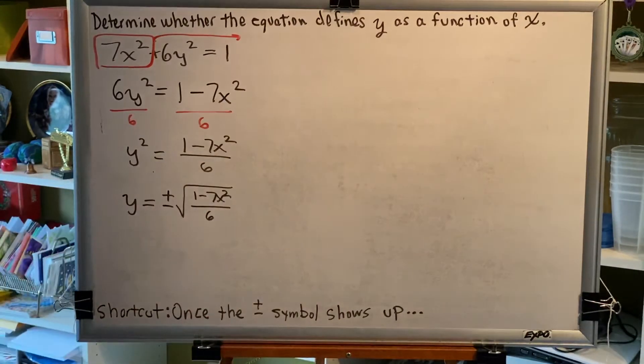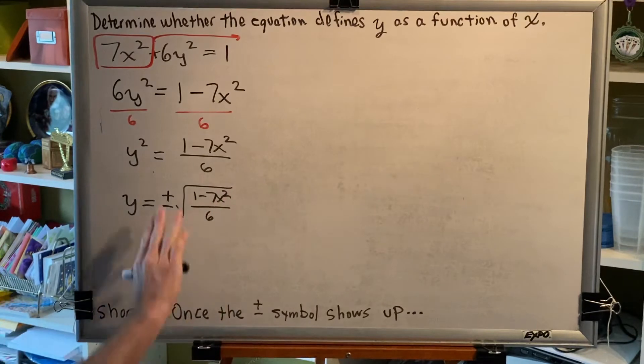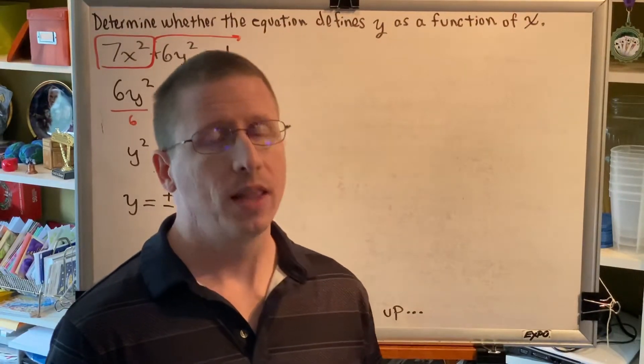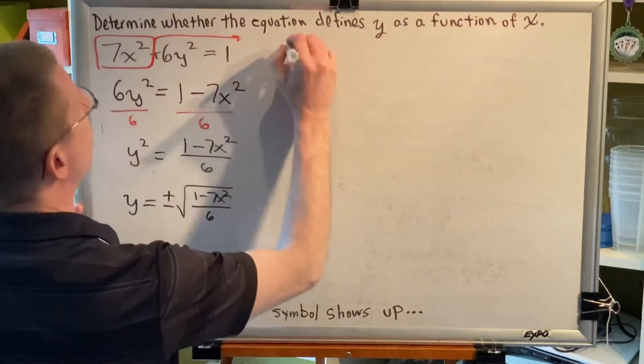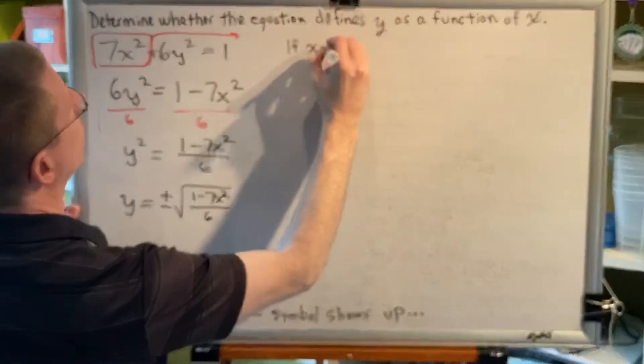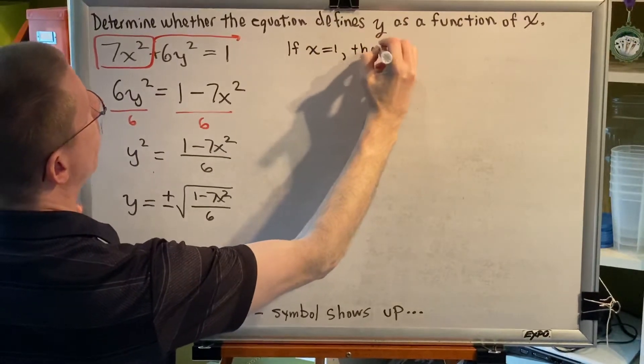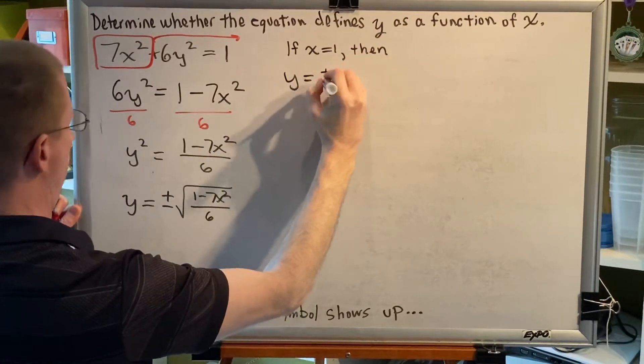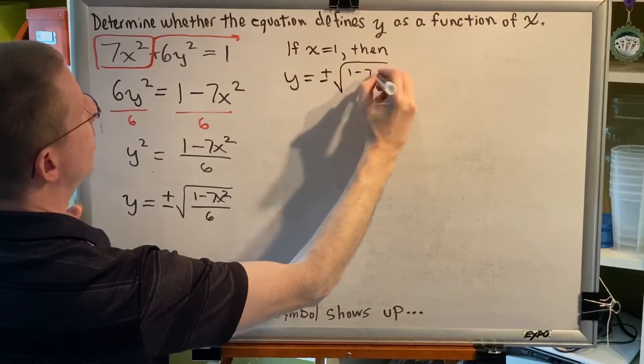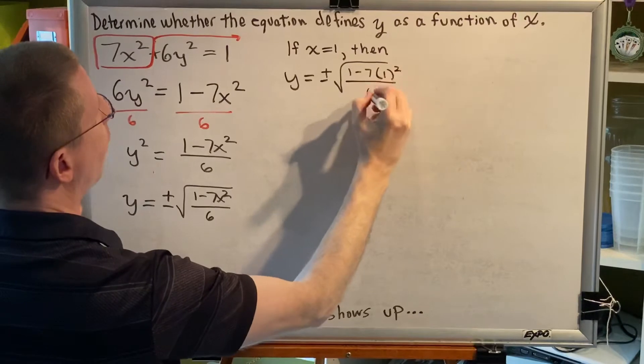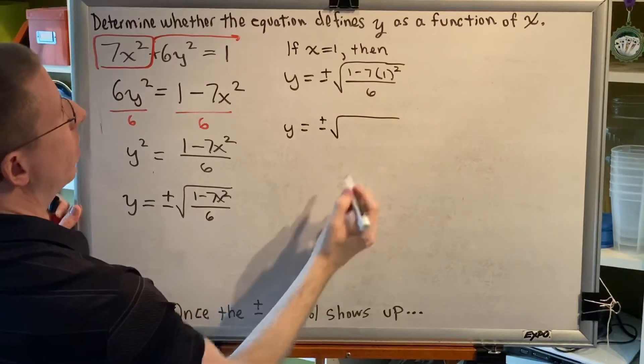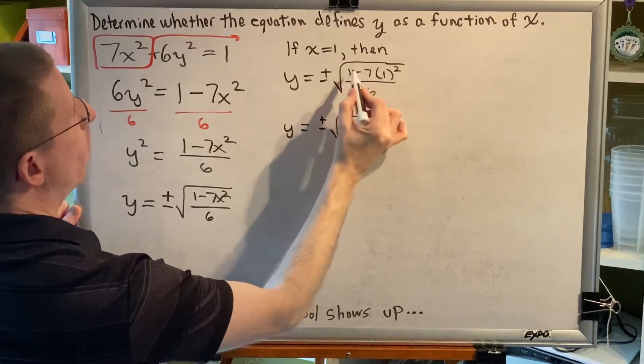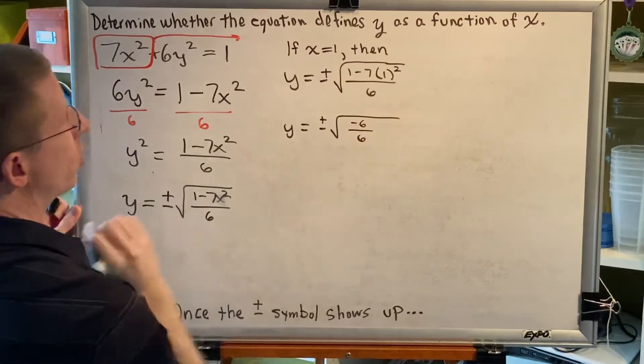What kind of number can we replace x with so that when we simplify the right side, we get real numbers for y? Let me give you a really good example of a number that will not do that. If you choose x = 1, then watch what happens. Y would be ±√[(1 - 7(1)²)/6]. Following the order of operations, 1² is 1, 1 times 7 is 7, and 1 minus 7 is -6.